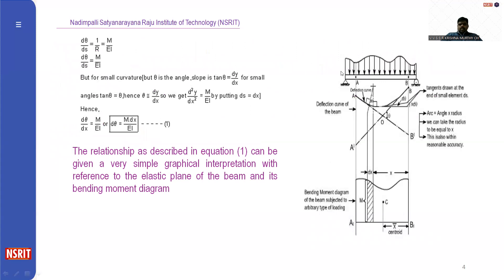If the beam deflects downwards, tangents are drawn with respect to angle theta. The arc is at an angle of x times radius. So d(theta)/ds is nothing but the slope with respect to the radius of curvature, that is 1/R = M/EI. Since theta is very small, slope equals dy/dx, so d²y/dx² = M/EI, and d(theta)/dx = M/EI.